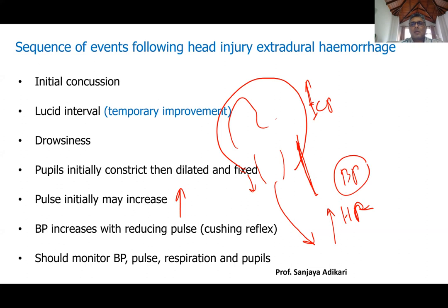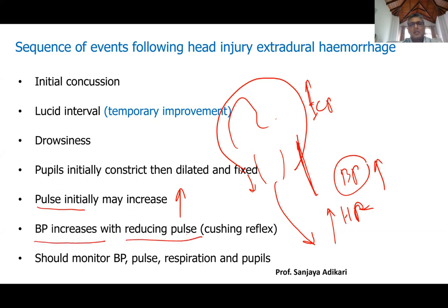When heart rate goes up, blood pressure also rises. Baroreceptors in the neck detect the rising blood pressure and then reduce the heart rate. So the sequence is: pulse rate rises, blood pressure rises, then pulse rate falls. This is called the Cushing reflex — raised pressure with low pulse — which is a secondary event due to the baroreceptor mechanism. You will also learn this in physiology.